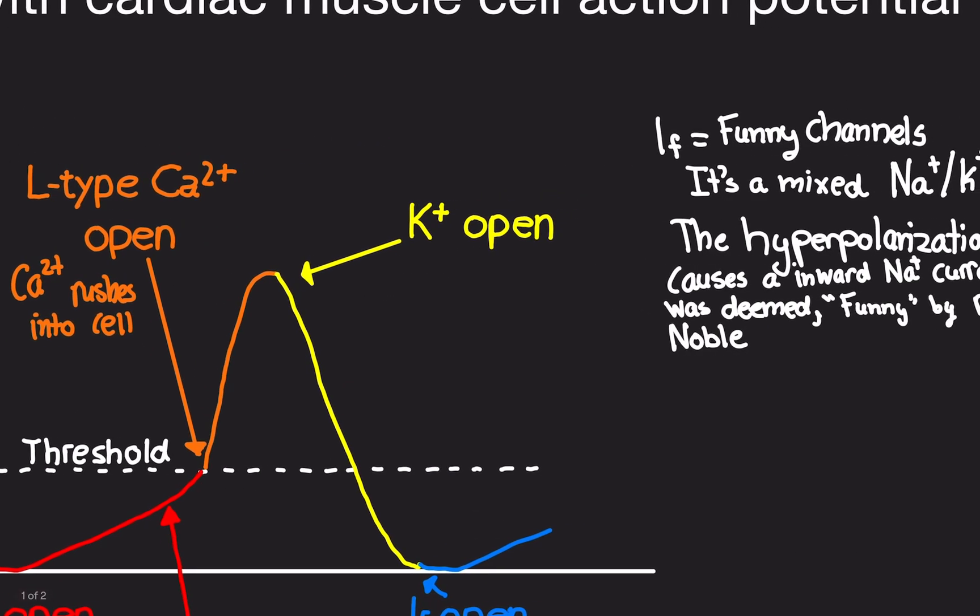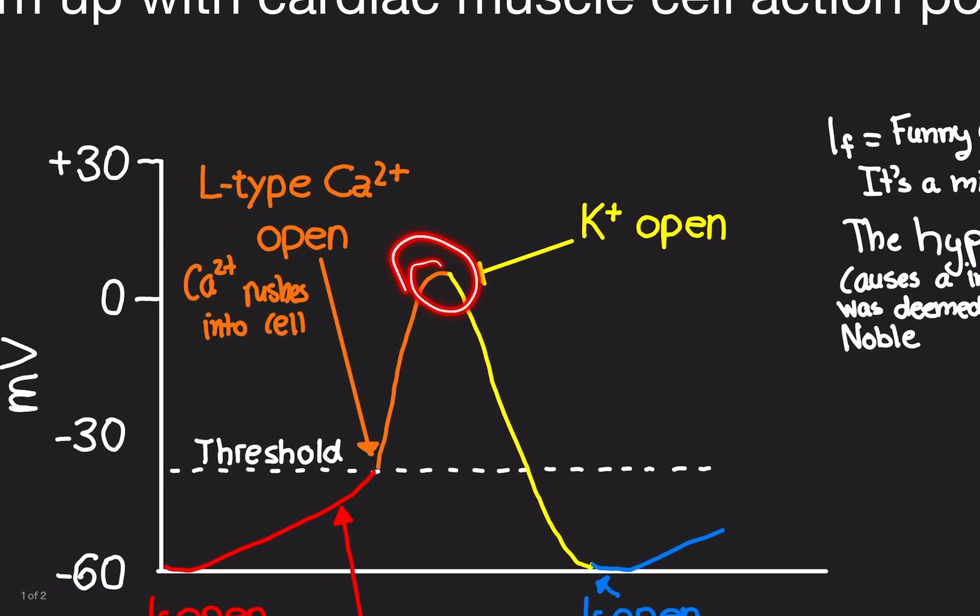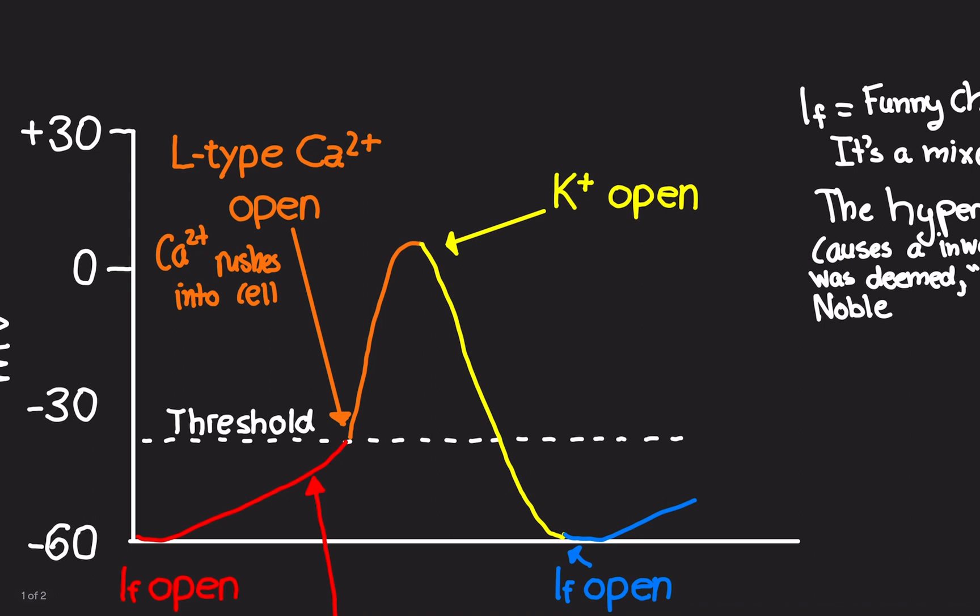Now, when it reaches peak here, it's around zero. Potassium channels are going to open up. They're just regular potassium channels. It's not potassium TO or DR. Just regular old potassium channels that we're used to. They're going to open. And since potassium is positively charged, and if you can see from the graph, we're going down in voltage. Now we're from zero to going way down. That must mean that potassium is leaving the cell.